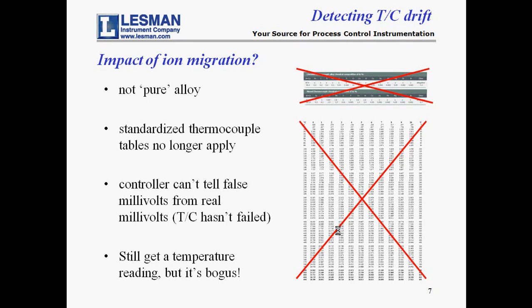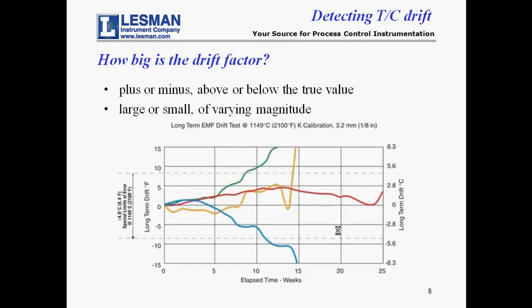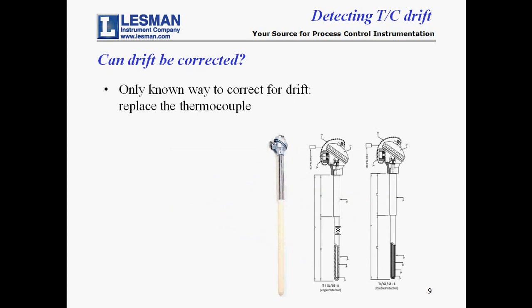Impure alloys produce a millivolt output that does not correspond to the values in the published standardized table. The problem is that the temperature controller interprets the millivolt electrical signal according to the published tables, but a millivolt output from a polluted junction has no published table. The result? Drift. Temperature readings from a drifting thermocouple are not true temperature readings — they're bogus temperature readings. Drift can be plus or minus above or below the true value; the green curve drifts upward and the blue curve drifts downward. The magnitude of the drift can be large or small. There is no known way to correct for drift other than replacing the sensor with a new thermocouple made from pure alloy.